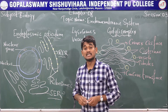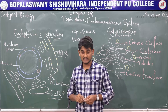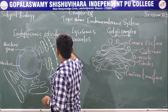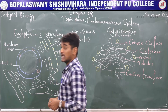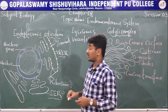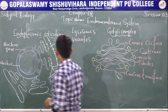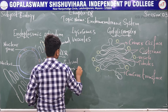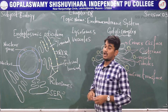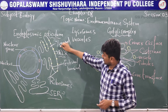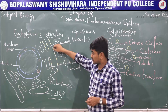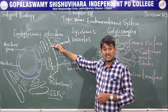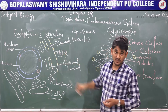The endoplasmic reticulum divides the intracellular space into two compartments: the luminal compartment, which means inside the endoplasmic reticulum, and the external luminal cytoplasm compartment. If ribosomes attach to the surface of the endoplasmic reticulum, it becomes rough — that is considered as rough endoplasmic reticulum.